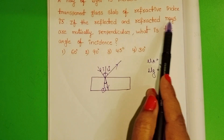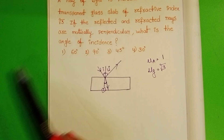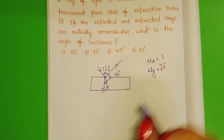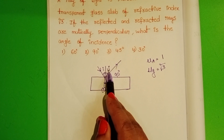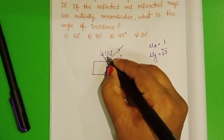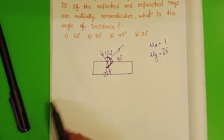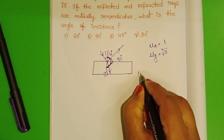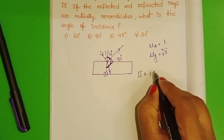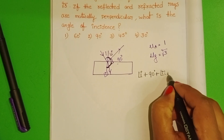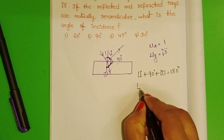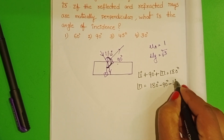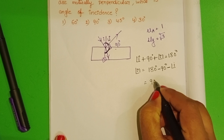The angle between reflected ray and refracted ray is 90 degrees. Observe the diagram: this angle is a straight angle of 180 degrees. Therefore, angle of incidence plus 90 degrees plus angle of refraction equals 180 degrees. So angle of refraction equals 180 minus 90 minus angle of incidence, which gives us r = 90 minus I.